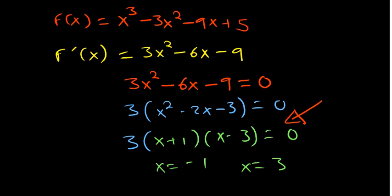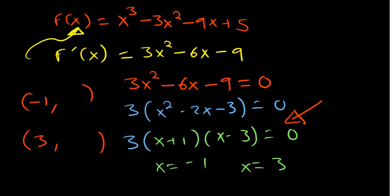To find the full critical points, determine the y-values by substituting back into the original function. Plugging in x = -1 gives (-1)³ - 3(1) + 9 + 5 = 10, so the point is (-1, 10). Plugging in x = 3 gives -22, so the point is (3, -22). That's how you find the stationary or critical points of a simple polynomial.